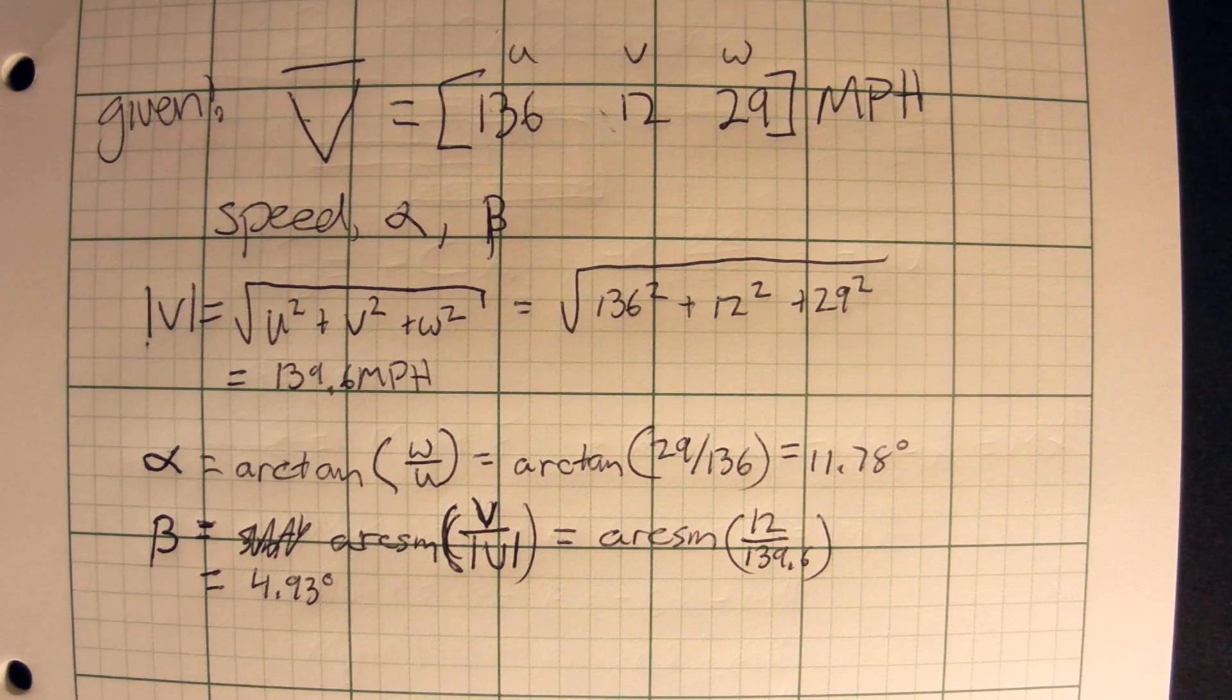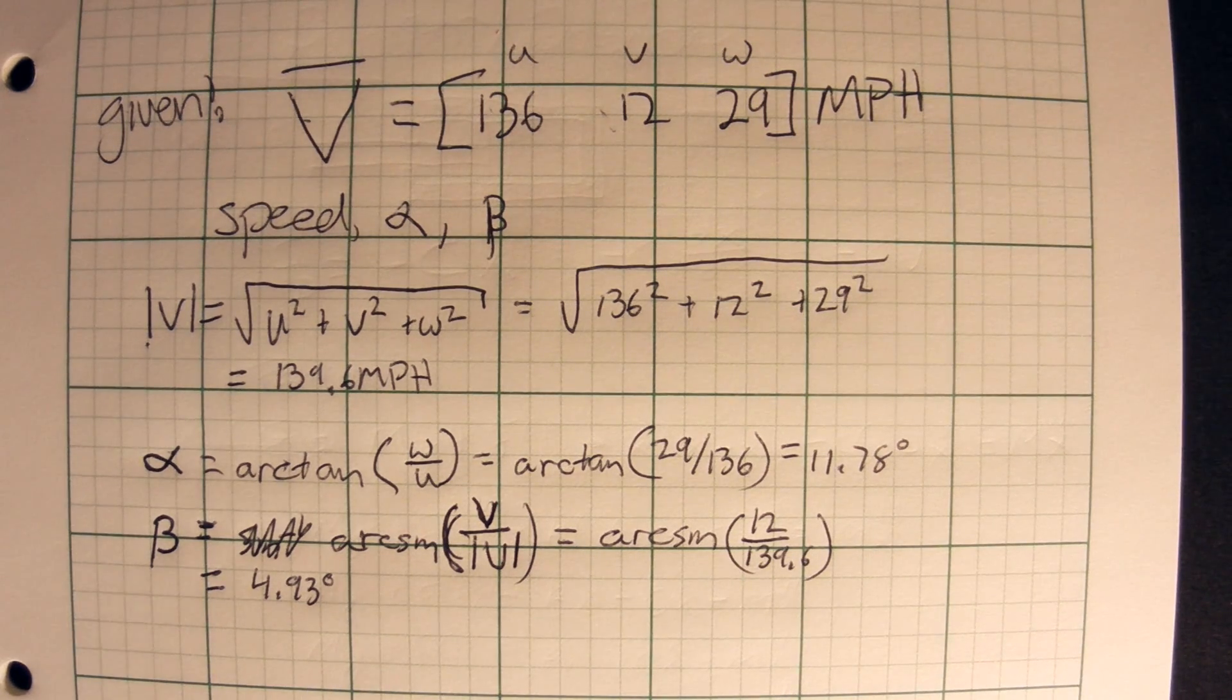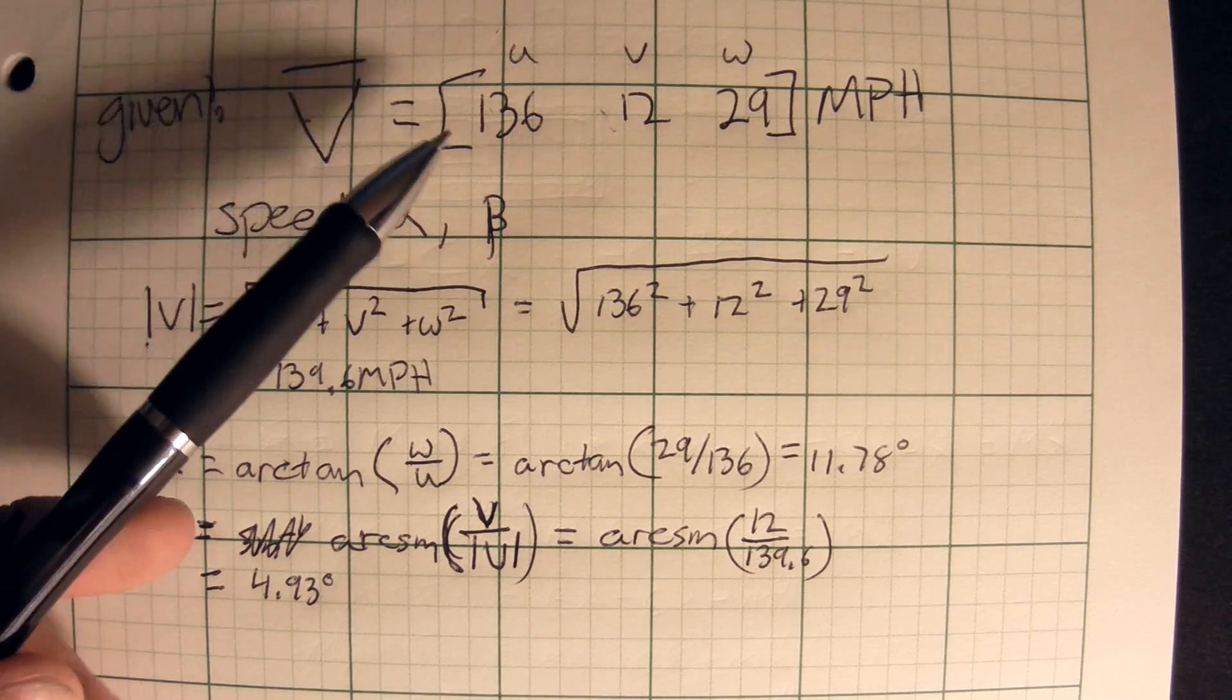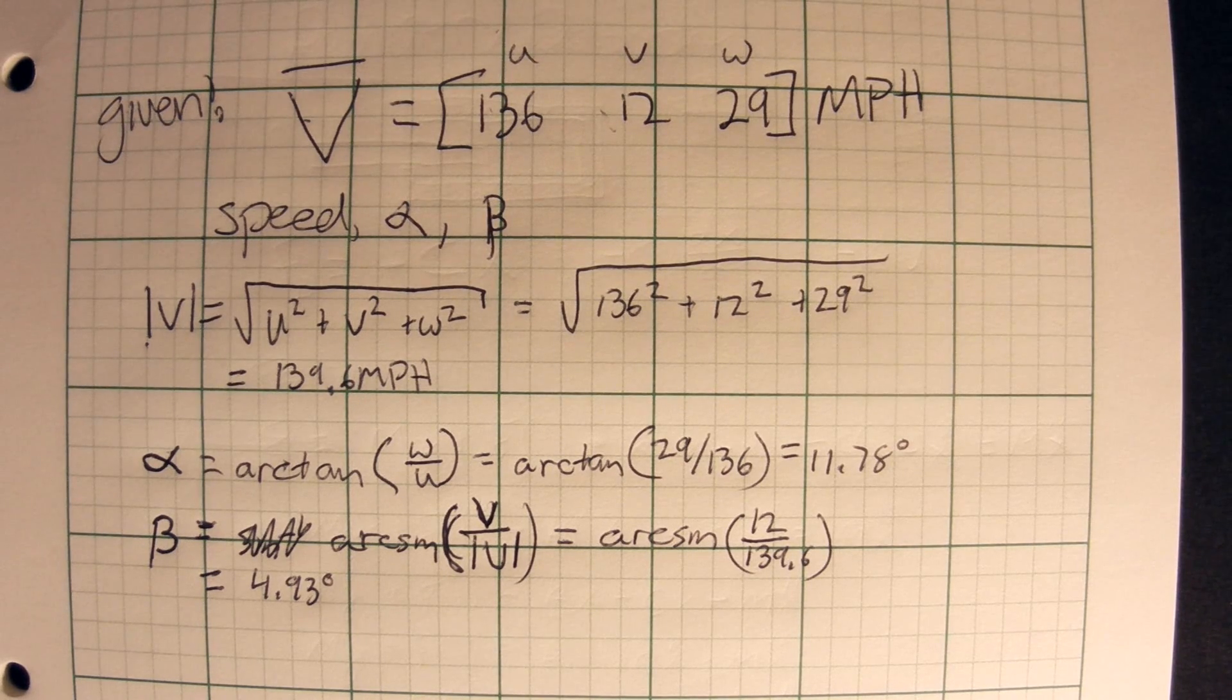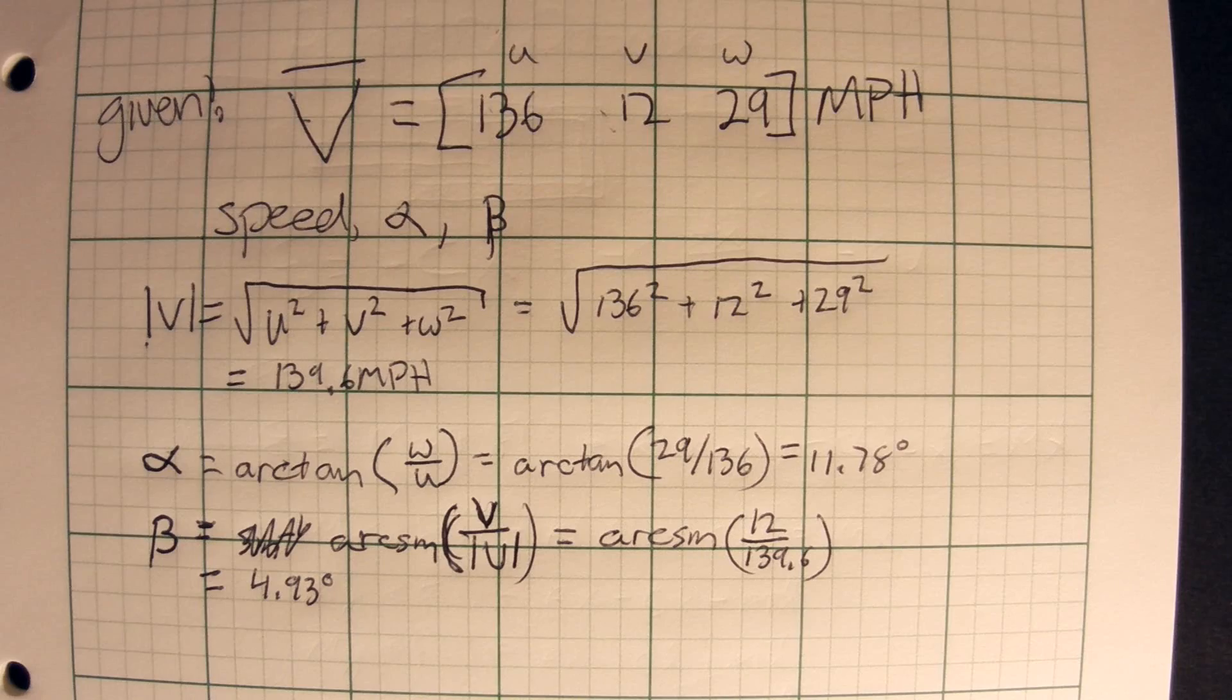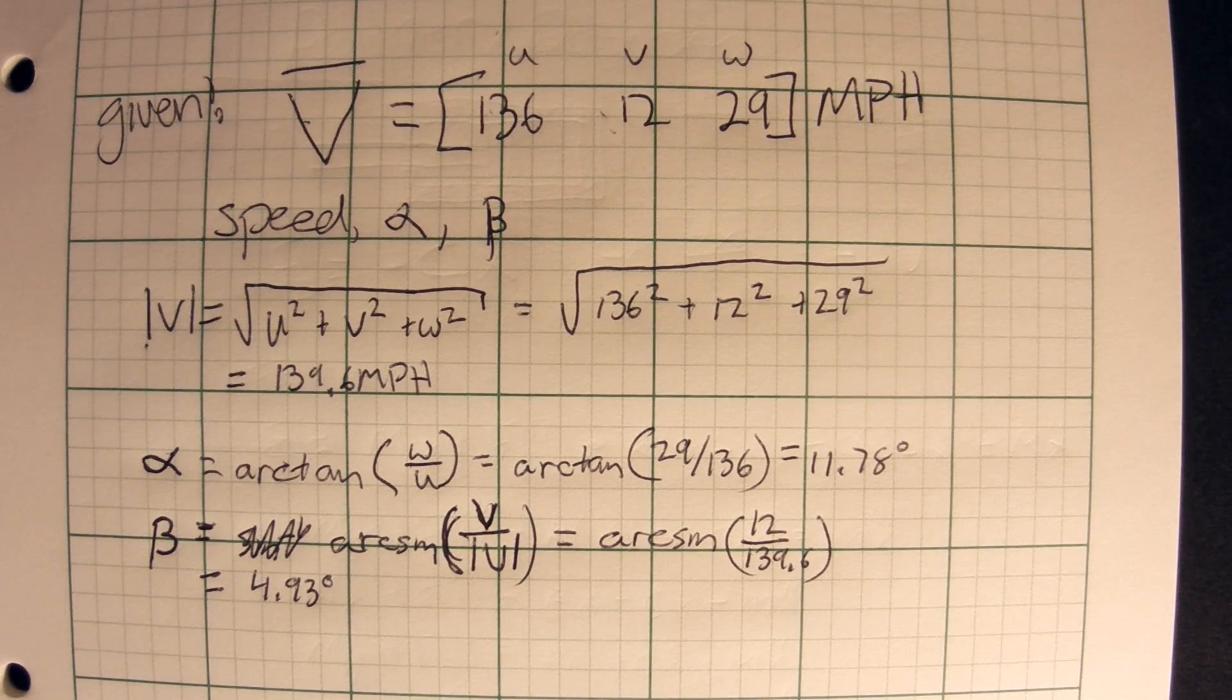That right there is a pretty simple example of how to use the equations we derived last time. Normally, you probably won't be given a velocity vector like that. That's a pretty nice velocity vector to work with. I mean, we give you all three parts of it. Generally, I don't think someone measures how fast you're going in three component parts. But in case they do, you know how to figure out the side slip angle and the angle of attack. So that is just a simple example right there.